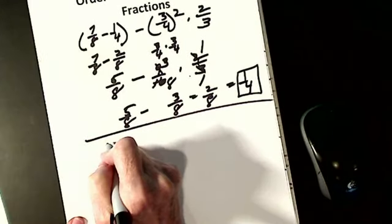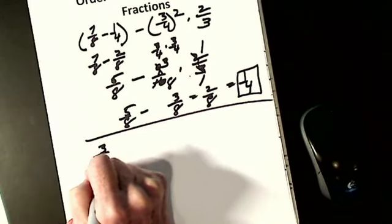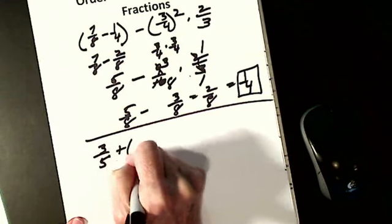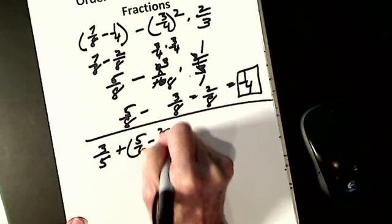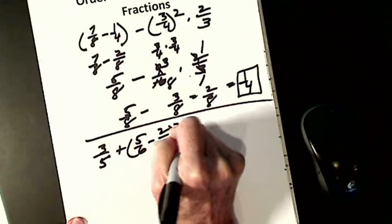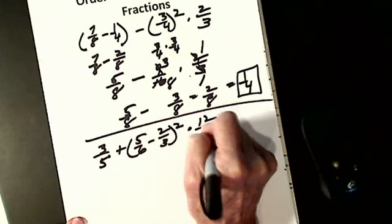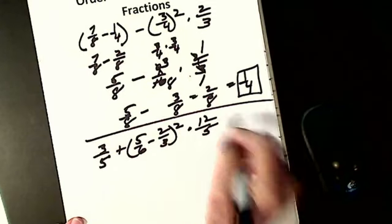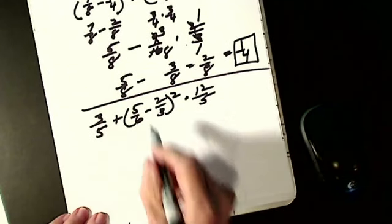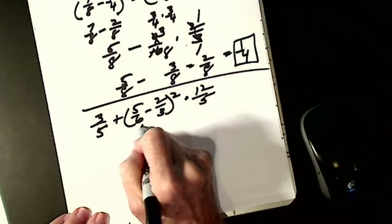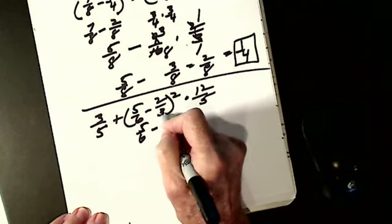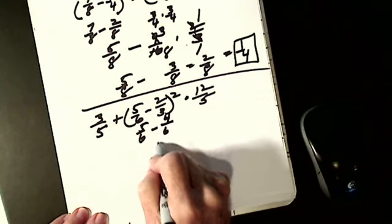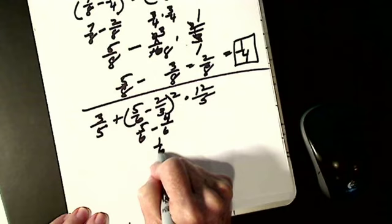Last one: three-fifths plus the quantity five-sixths minus two-thirds, squared, times twelve-fifths. I have to do what's in parentheses first. Common denominator is sixths: two-thirds becomes four-sixths. Five-sixths minus four-sixths gives me one-sixth.